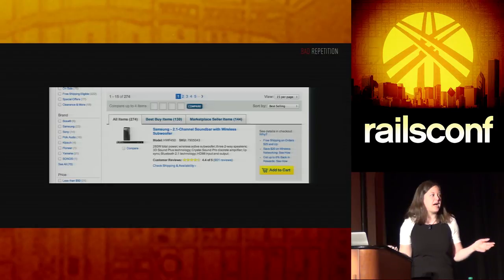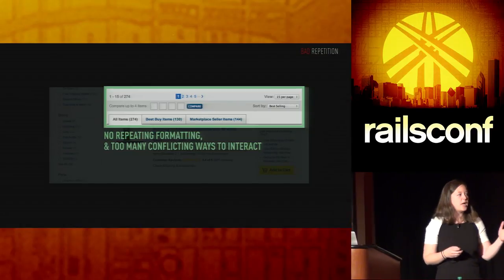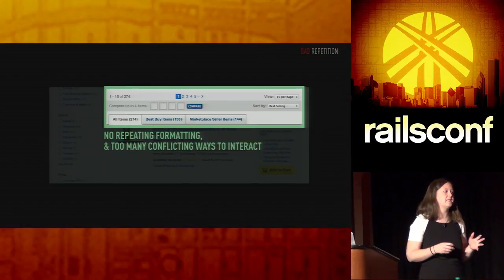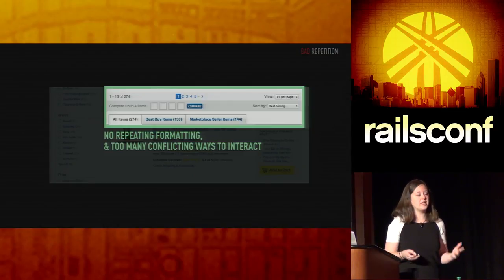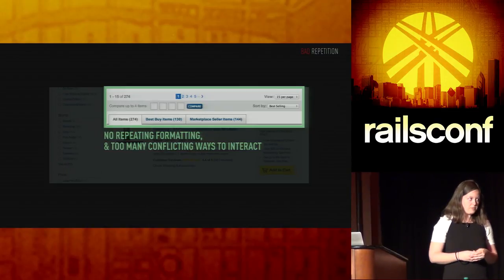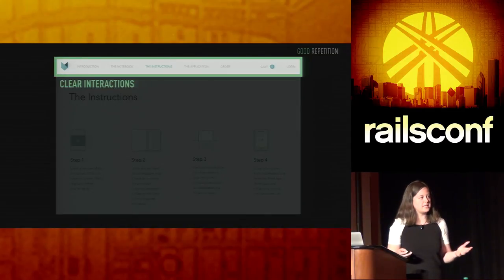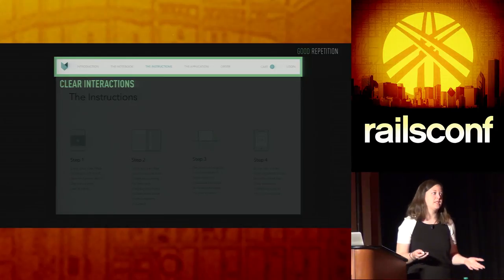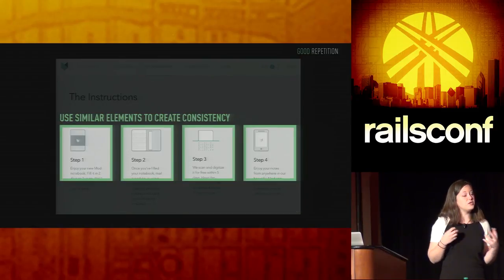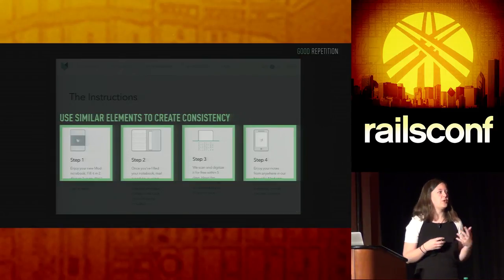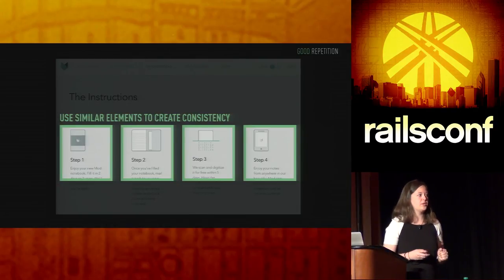This Best Buy list of products has a ton of different ways to interact — so many different buttons, dropdowns, and checkboxes. Imagine having to code this — every time you add a new feature, you have to design a new way to put it on there and it doesn't fit. It's confusing for the user. Whereas this cleaner site has links across the top that all look the same. If you have to add a new one, it just goes in there. It uses a grid, which is comfortable for users, with icons that are all the same design and matching typography.